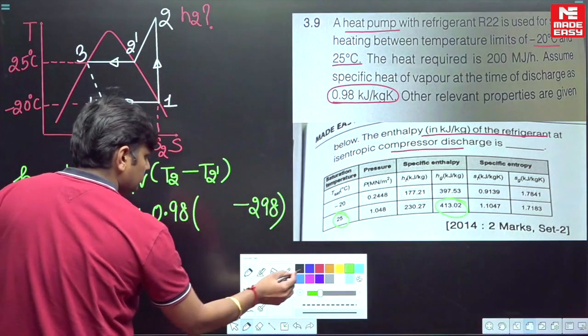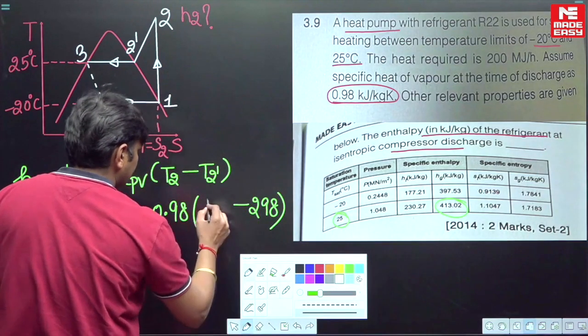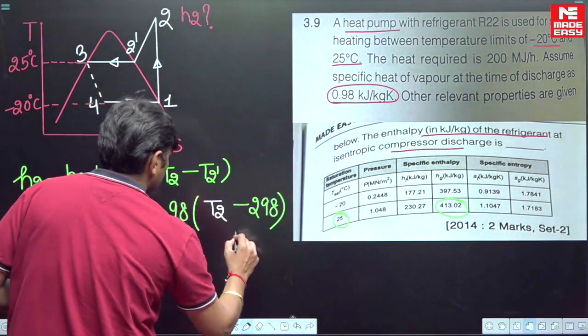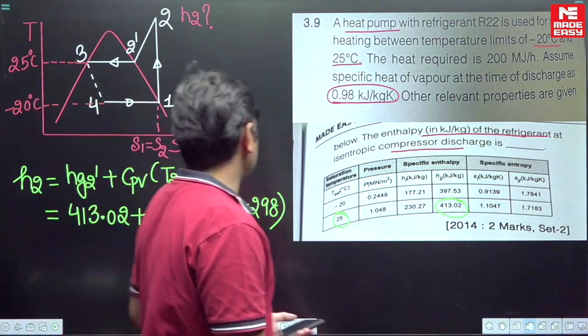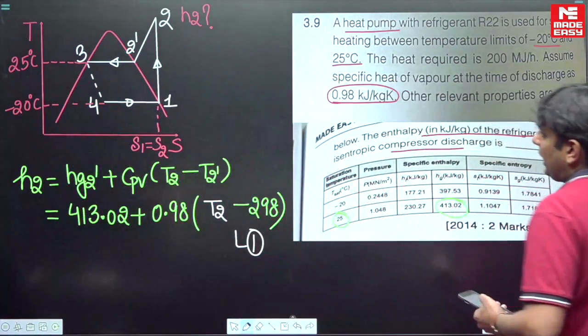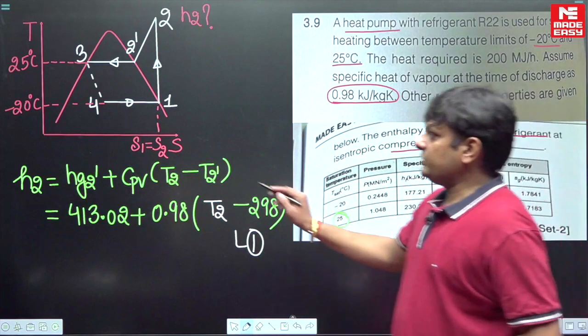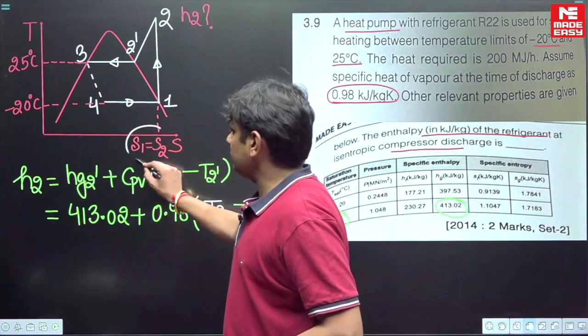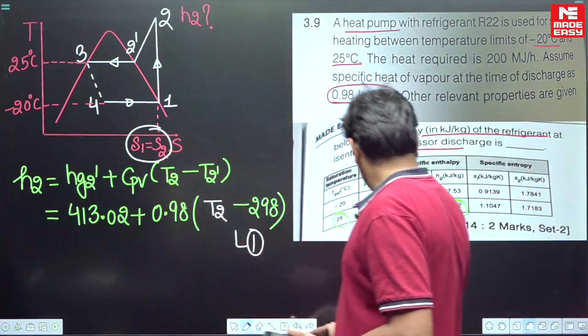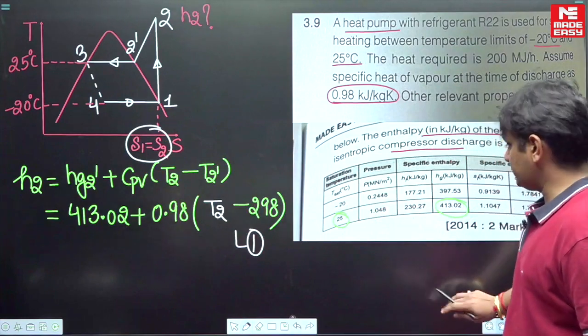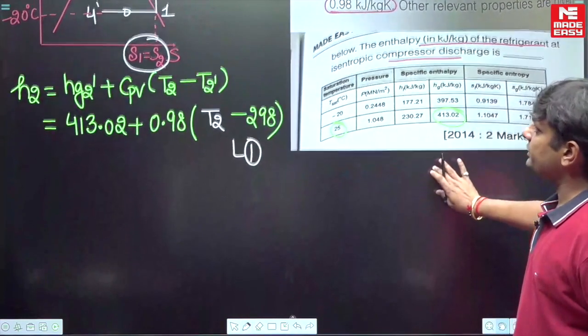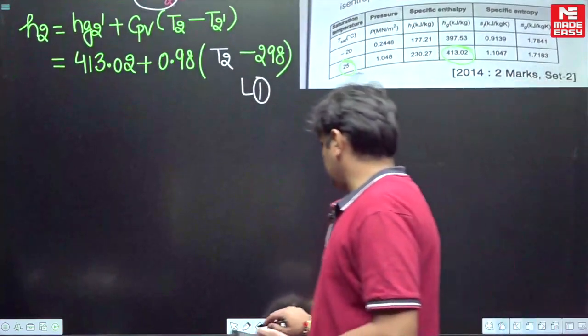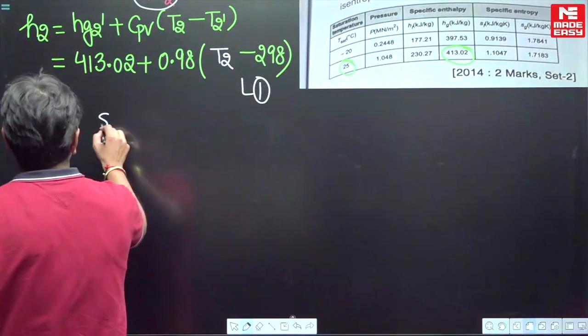This is equivalent to 298 Kelvin. So now what is unknown? The unknown factor is your T2. So now tell me how to find out the values of T2? By using this concept, isentropic compression.